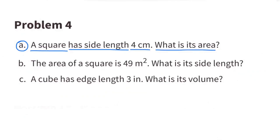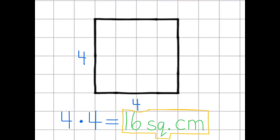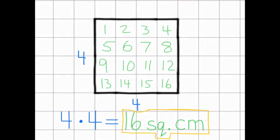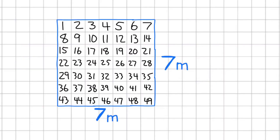Number 4A. A square has a side length of 4 centimeters. What is its area? Here is an illustration of a square with side lengths of 4 centimeters. 4 centimeters times 4 centimeters equals 16 square centimeters. Part B: The area of a square is 49 meters squared. What is its side length? Here is an illustration of 49 meters squared. Looking across the top, the top side length is 7 meters. Since it is a square, all side lengths will be 7 meters.